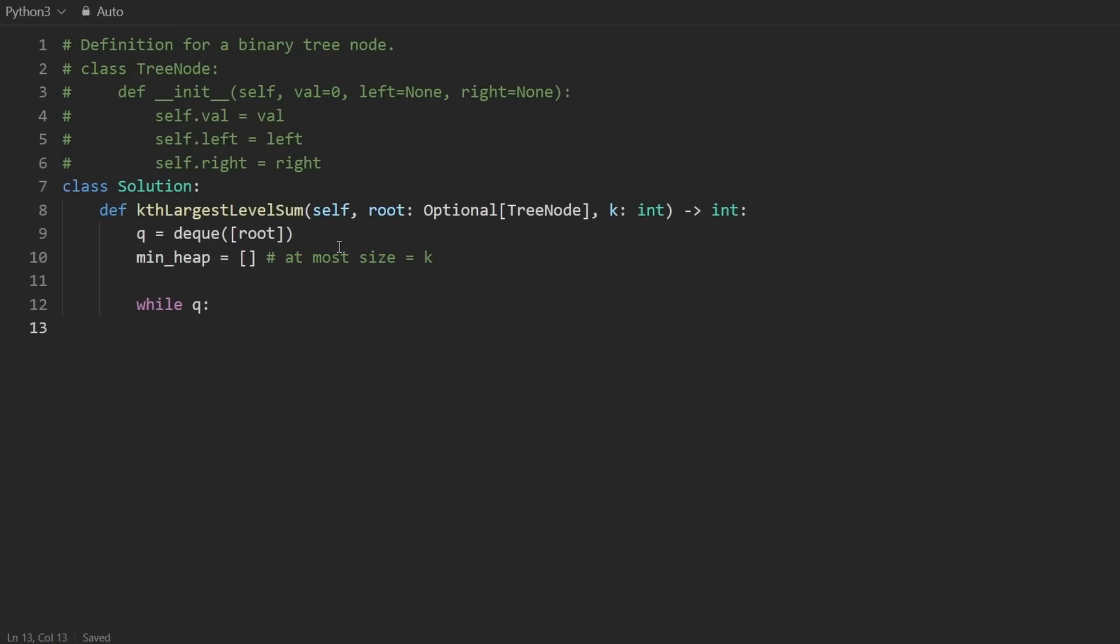And then while the queue is non-empty, we're going to do the breadth first search. So for a particular level, we want to compute the level sum, I'll initialize that to zero. Now we're going to go through the current level. So I'm going to take a snapshot of the length of the queue at this point in time. And that's how many times I'm going to iterate. So I'm going to have a for loop for i in range this many times. So just going through the current level, the reason I'm doing this is because we're actually going to be adding to the queue as we go through the current level. So that's why it's important to take a snapshot. And that's what this does in Python.